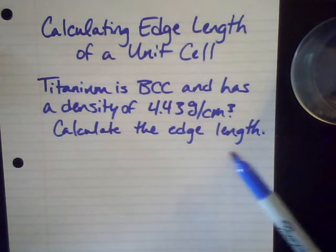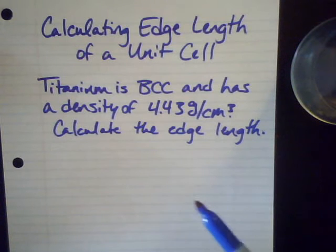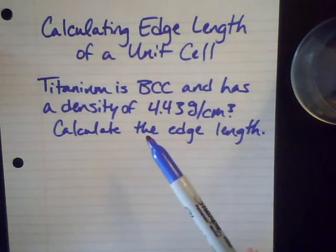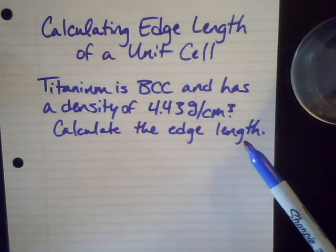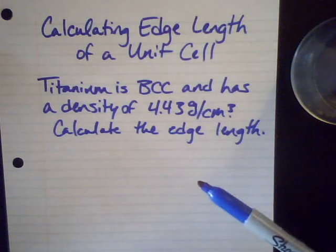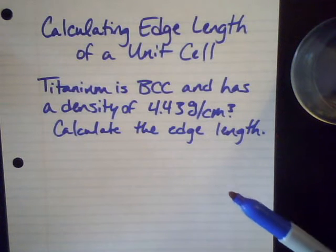So far we've been doing it where we're given the length or we're given the atomic radii, and then we can calculate the volume of a unit cell. Now we're going to go from a macro scale and figure out the edge length from there. A little bit of different thinking, and this will help with the last question on your sapling assignment for chapter 11.